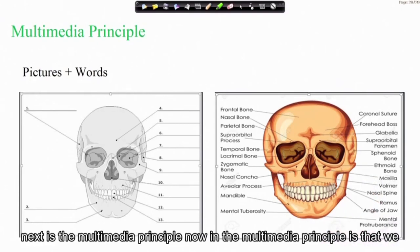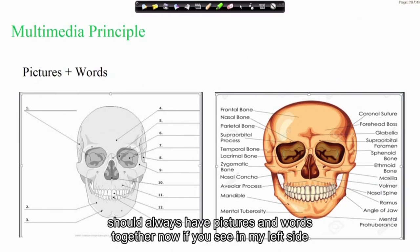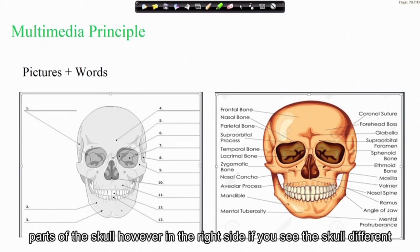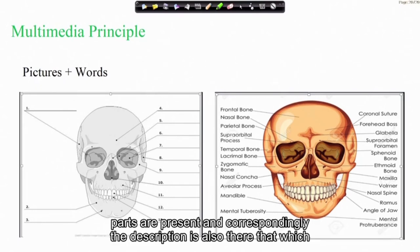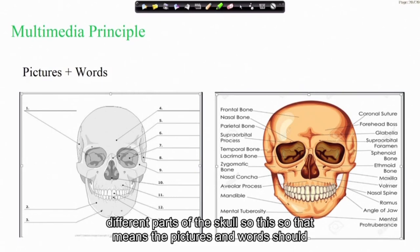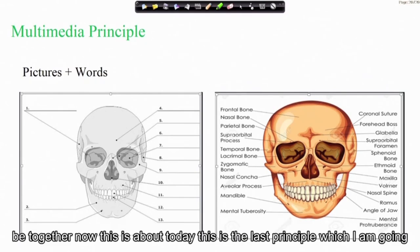Next is the multimedia principle: we should always have pictures and words together. For example, on the left side there is a skull with no labels, but on the right side the skull has its different parts labeled with corresponding descriptions. It is much easier for the student to understand the different parts of the skull when pictures and words are presented together.